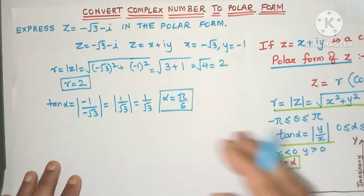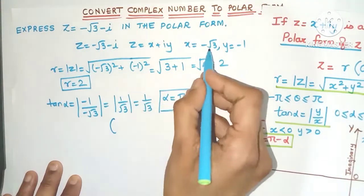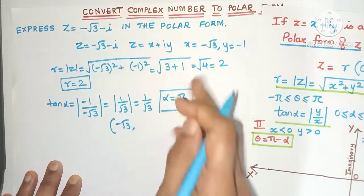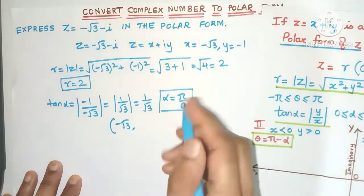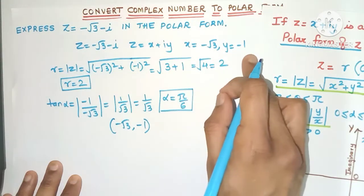So in our example over here what will be the x coordinate? Yes, x coordinate will be -√3. This is the real part of z. And what is the y coordinate? Yes it will be the imaginary part of the complex number which is -1.